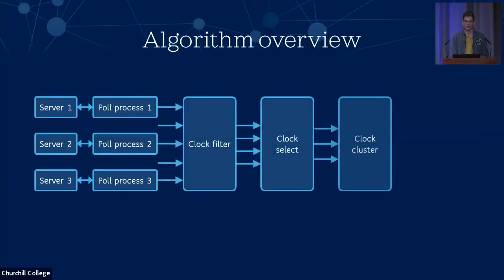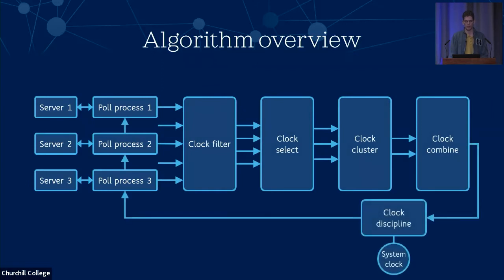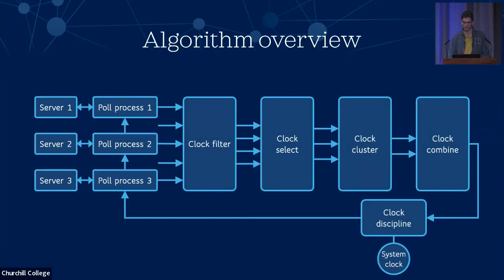These values are then passed through a suite of filtering algorithms where at each stage the number of valid samples is getting filtered down and decreasing, until at the end we're left with a single value which is our best estimate clock offset. That offset is then passed to the clock discipline algorithm which is what's actually adjusting our system clock, and that feeds back around to form a feedback loop.